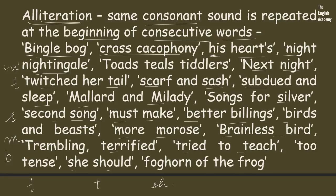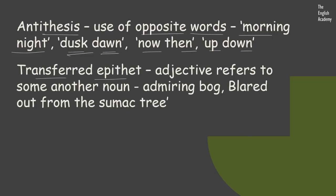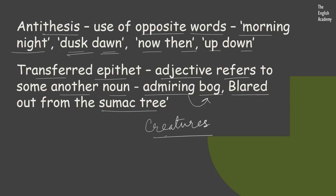The next device is antithesis — the use of opposite words. Morning and night are opposites, dusk and dawn are opposites, now and then, up and down. The next device is transferred epithet, where the adjective used refers to another noun. For example, 'admiring bog' — the adjective 'admiring' does not refer to the bog but to the creatures of the bog. Similarly, 'blared out from the sumac tree' — the sound is not made by the sumac tree but by the frog sitting at the foot of the tree. Both are instances of transferred epithet.